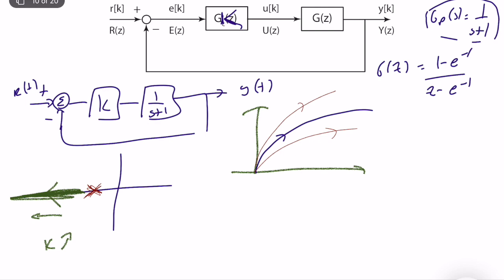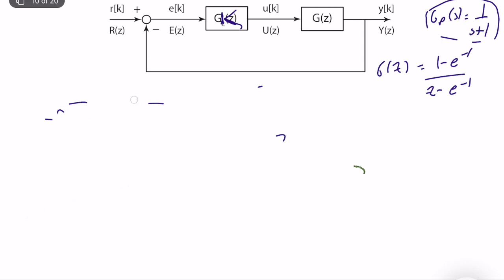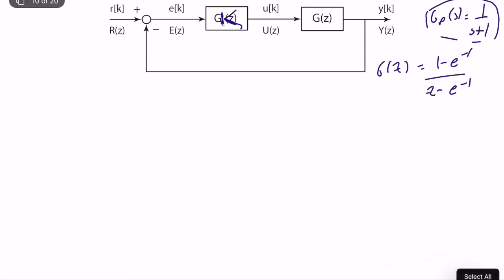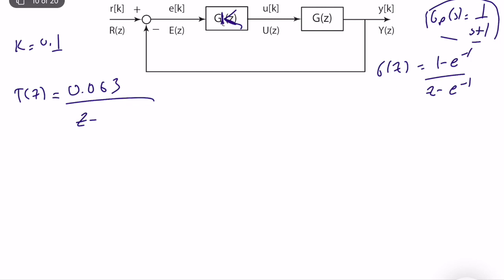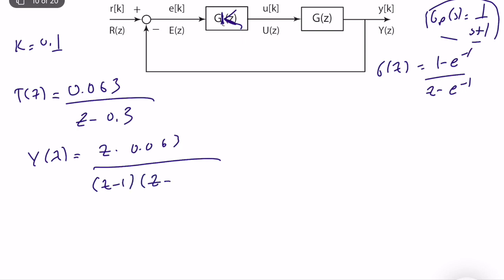Now let's analyze the problem from the discrete-time perspective. Same plant, but now we have a discrete-time P-controller instead of a continuous-time P-controller. Let's start with K = 0.1. In this case, T(z) = 0.063 / (z - 0.3). This is T(z), and we want to compute the step response. Y(z) = 0.063·z / ((z - 1)(z - 0.3)).